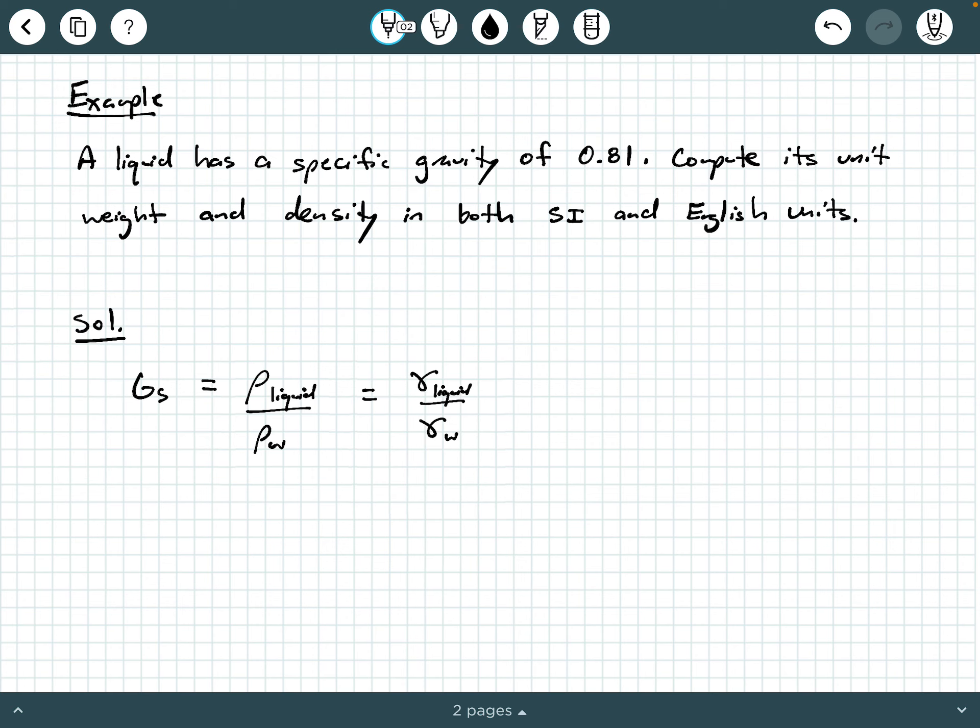So we have these two different expressions, and we can calculate what's being asked of us using this. We can say that the density of the liquid equals g sub s times the density of water, and the unit weight of the liquid is computed as g sub s times the unit weight of water. Here are our governing equations that we're going to use.